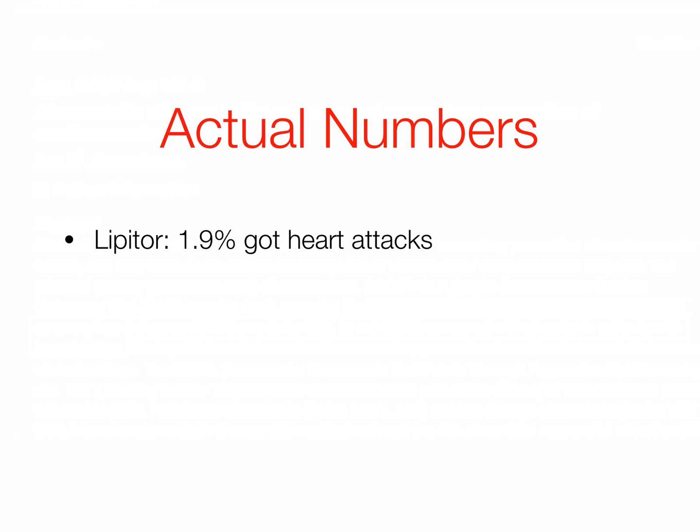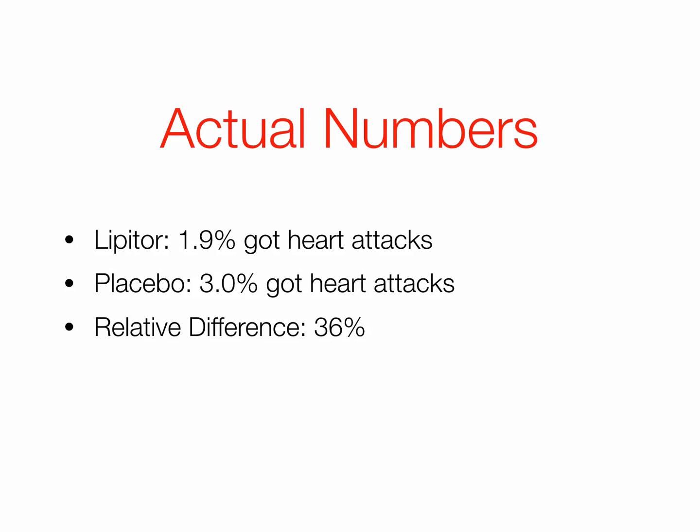Well, let's look at the actual numbers. Those who took Lipitor, according to this same study, 1.9% had heart attacks or strokes. In the placebo group, the number was higher — it was 3%. The difference between those two numbers is 36%, in that 1.9 is 36% lower than 3.0.